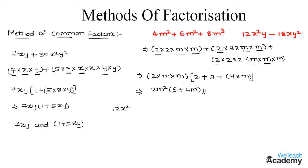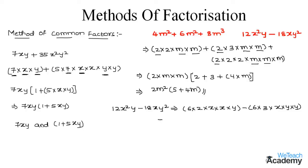Now let us solve the other expression: 12x²y − 18xy². We can write the first term as 6 × 2 × x × x × y, and 18xy² as 6 × 3 × x × y × y. Now taking out all the common terms — we have 6, x, and y as the common factors — giving us 6 × x × y × (2x − 3y).